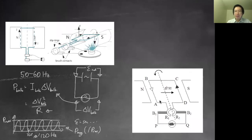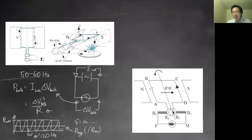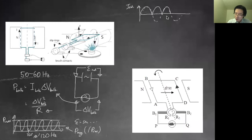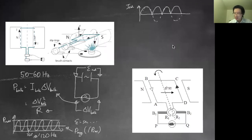A DC generator needs to be a little more clever. If you don't want the current to flip back and forth, you split the ring in half — a split-ring commutator. The moment the current starts going the other way due to electromagnetic induction, the commutator flips the connection to the other side. So what you get is current that only flows one way, though it still goes from high to low periodically — that's the cosine nature of the rotation.